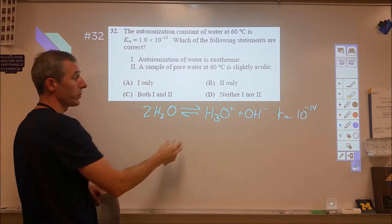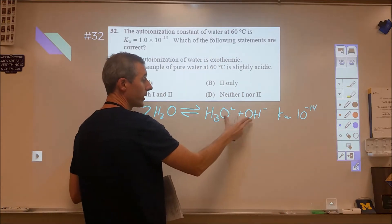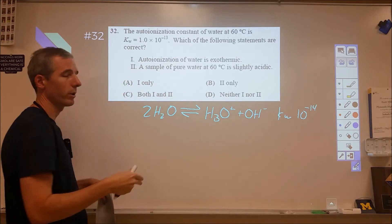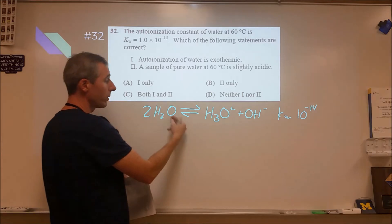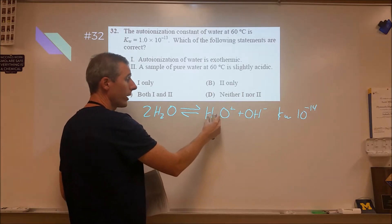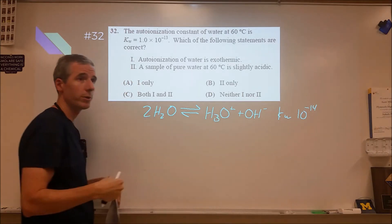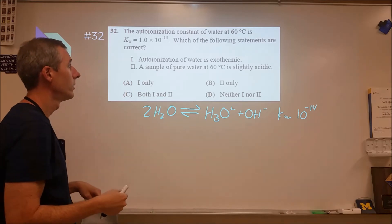So we're seeing the Kw increase, which means that our equilibrium constant is larger, which means we expect more products at a higher temperature. The reason for that is because as your molecules start moving faster and faster, there's going to be larger collisions, which is more likely then that an H plus could be jarred loose and transferred over to something else.